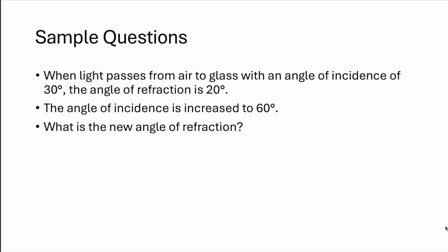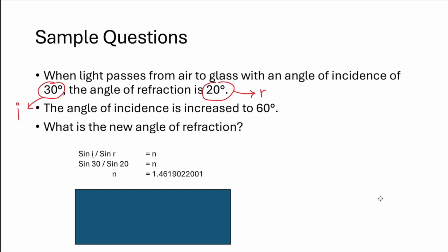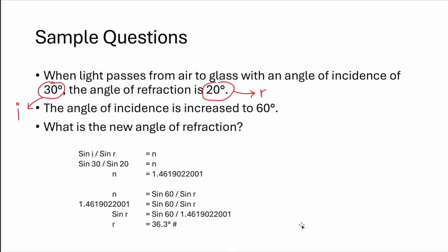Okay, this is quite simple. Light passed from air to glass, so it's less dense to dense. Incident angle 30. Refracted angle is 20. So from this, you can already find the refractive index, sine i over sine r. Then next with the angle of incidence is changed to 60. What's next? Then you can input it back into the formula. And this is the answer you should be getting 36.